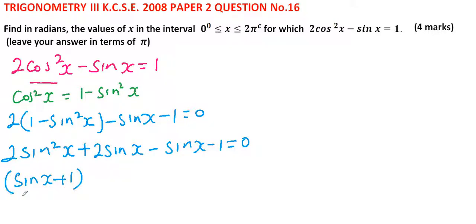and (2sinx - 1) = 0. This implies that sinx = -1 or sinx = 1/2.